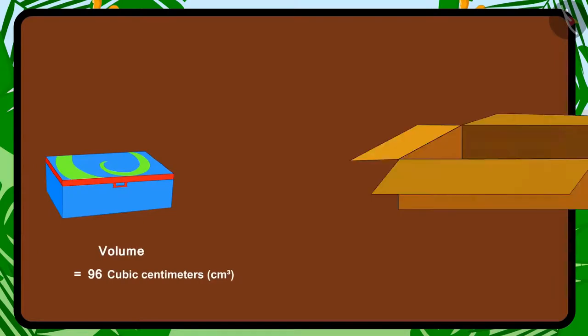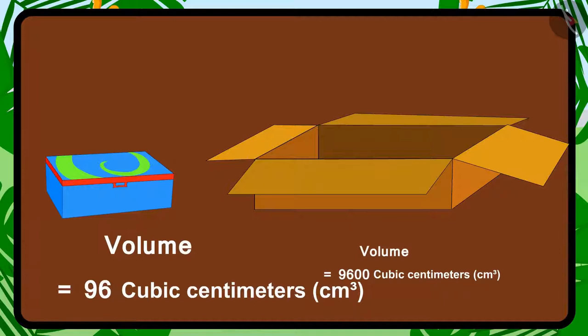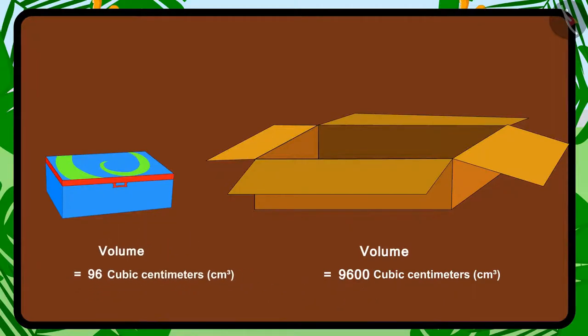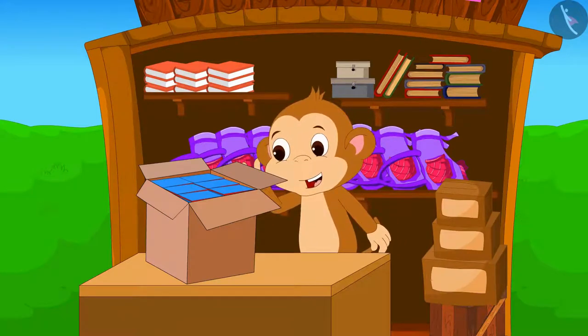And children, do you remember that the volume of each compass box is equal to 96 cm³? Let's see what Babban is doing with these compass boxes.